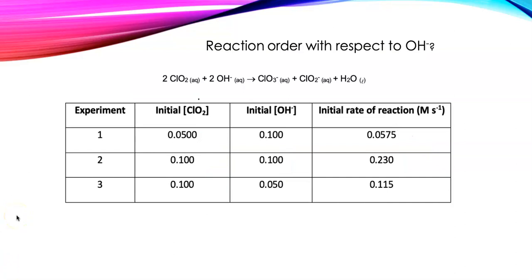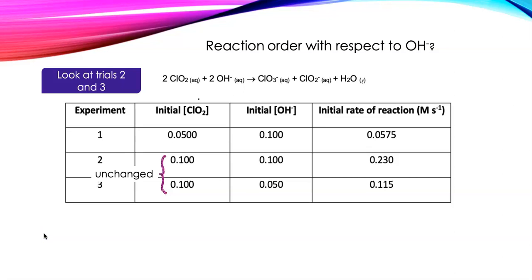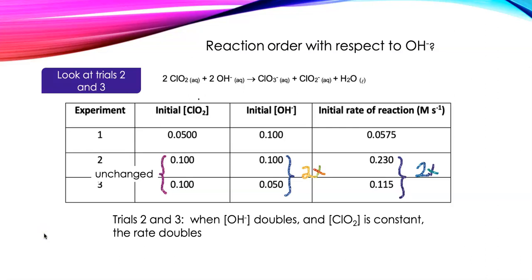Now let's use the same reasoning to figure out the reaction order with respect to the hydroxide ion. I need trials where the ClO₂ concentration is constant and the hydroxide ion is changing, so I'll look at trials two and three. The ClO₂ concentration is not changing, but the hydroxide ion concentration goes from 0.1 to 0.05 — that's a twofold change. The rate also changed twofold, from 0.230 to 0.115. When the hydroxide ion concentration doubles and the ClO₂ concentration is held constant, the rate doubles — it's first order with respect to hydroxide ion.